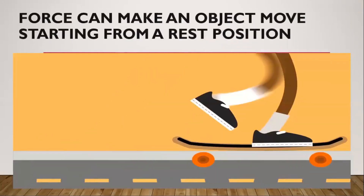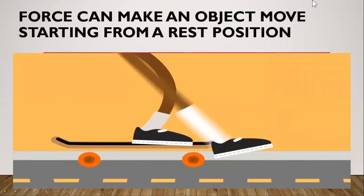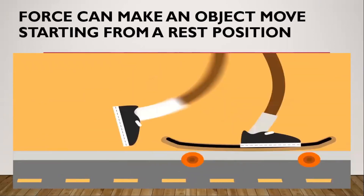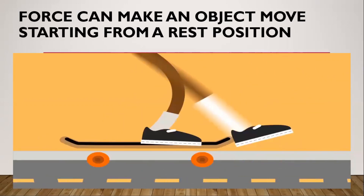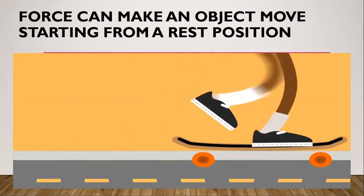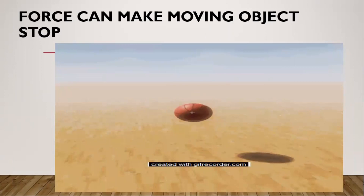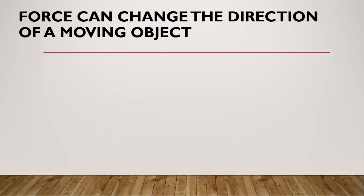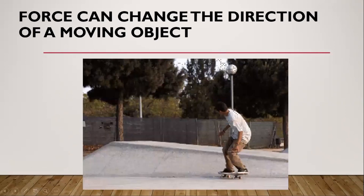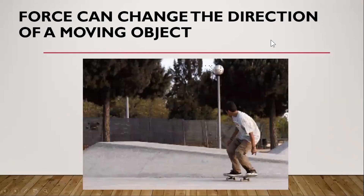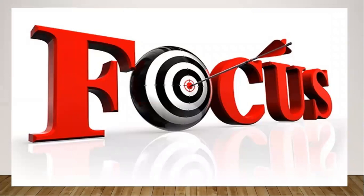Force can make an object move from a resting position — if the object is not moving and you apply force on it, the object will start to move. Second, force can make a moving object stop — if the object is moving and a force is applied, it will stop. Force can also change the direction of a moving object, as you, the one controlling the force, have the ability to manipulate the direction by applying force to it.